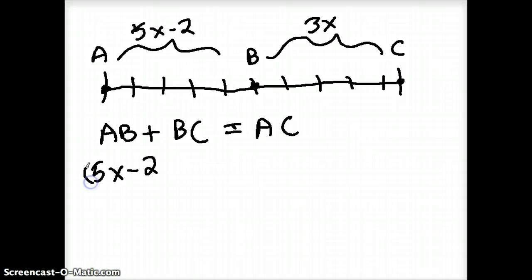Well, I'm going to take that AB distance whatever it is and I'm going to add it to whatever this 3x distance is, 3 times whatever the number x represents, and that should still give me AC.